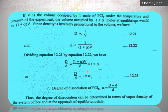If V is the volume occupied by one mole of PCl₅ under the temperature and pressure of the experiment, then the volume occupied by (1 + α) moles at equilibrium would be (1 + α)V.